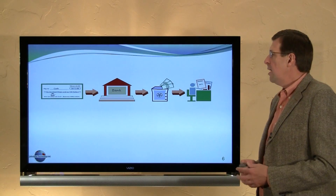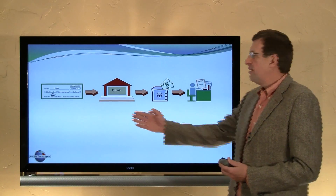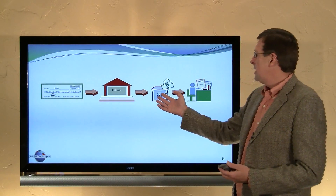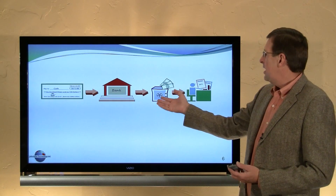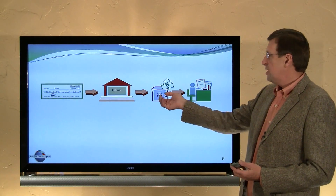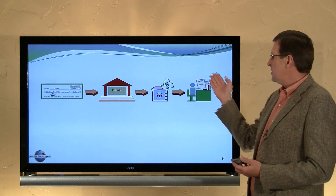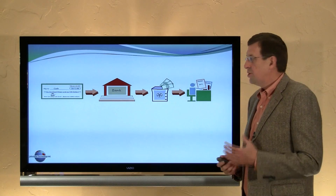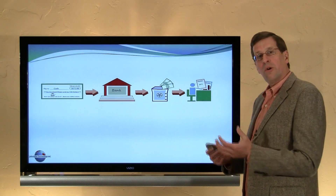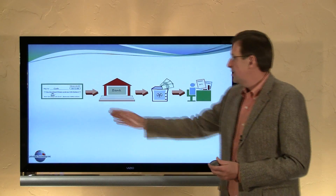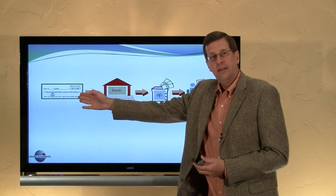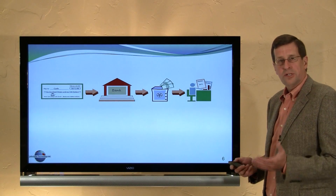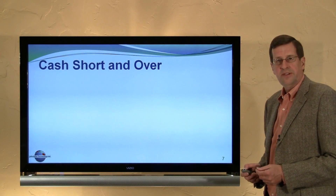To review: we have a $615 check taken to the bank, the money is taken and placed into the petty cash box, and the receipts are taken out and recorded in the accounting records. That journal entry was: credit cash $615, and debit the various expense accounts for a total of $615.